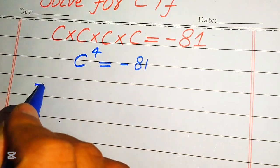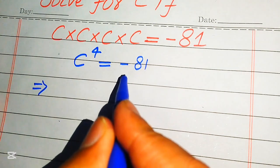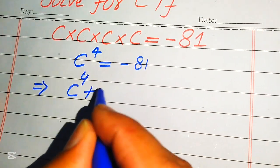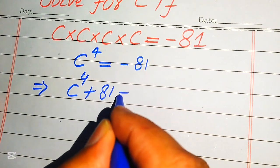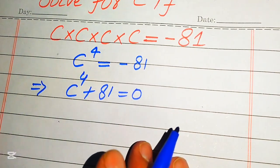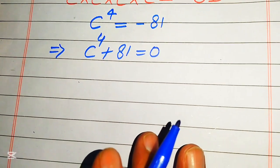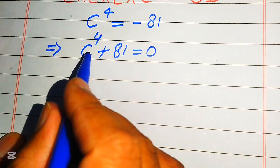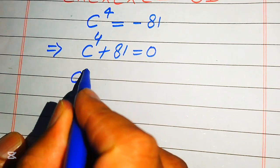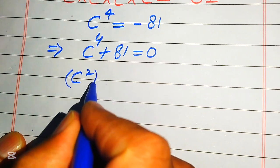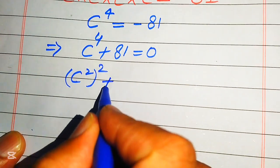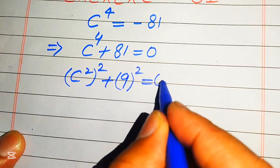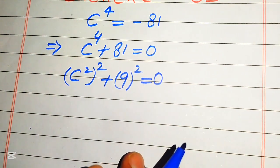First we need to move this minus 81 to the left hand side, and it will be written as c to the power of 4 plus 81 equals 0. Now in the next step we rewrite this equation — we write c to the power of 4 as c squared whole square, plus we write 81 as 9 squared, and this whole equation equals 0.